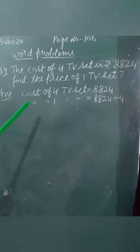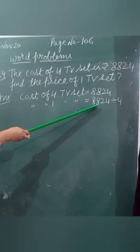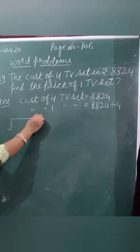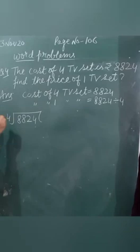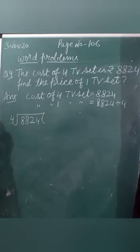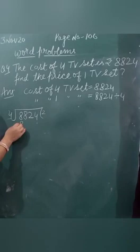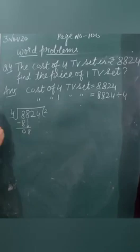Now we solve this sum. 8,824 divided by 4. Count the table of 4 till we get 8. 4 twos are 8. Subtract it. 8 minus 8, 0. Now bring down this 8. Again, 4 twos are 8. 8 minus 8, 0.